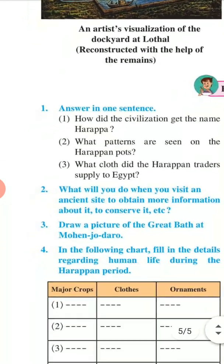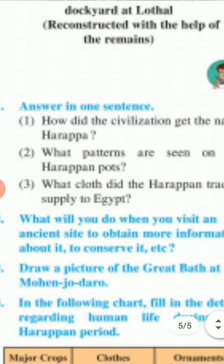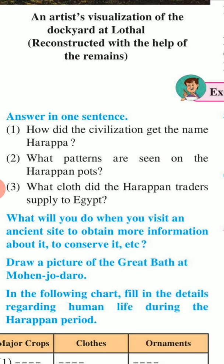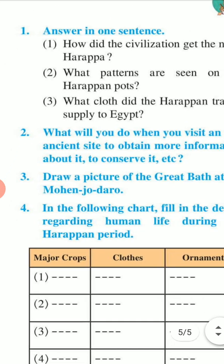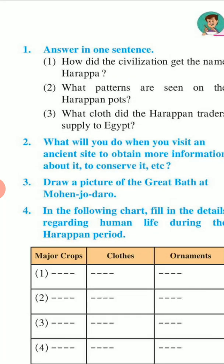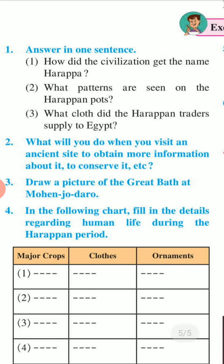Let's see the exercise. First question: answer in one sentence — How did the civilization get the name Harappa? What animals are seen on the Harappan pots? What did the Harappan traders supply to Egypt? Second question: What will you do when you visit an ancient site — to obtain more information about it, to conserve it, etc. Third: Draw a picture of the Great Bath at Mohenjo-daro.